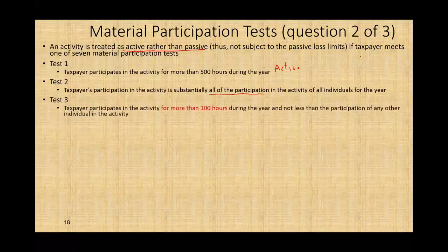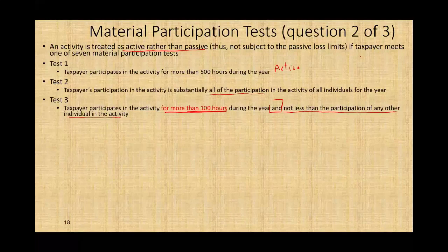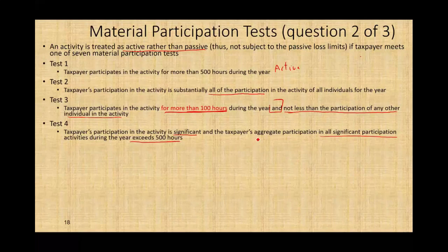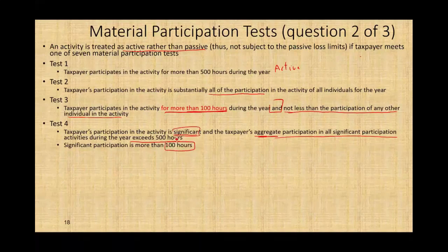Test three: the taxpayer participated more than 100 hours during the year and not less than the participation of any other individual — meaning you participated more than anyone else and put in more than 100 hours. Test four: the taxpayer's participation in the activity is significant, and the taxpayer's aggregate participation in all significant participation activities during the year exceeds 500 hours. Significant participation means you are making major decisions, and significant participation requires more than 100 hours.